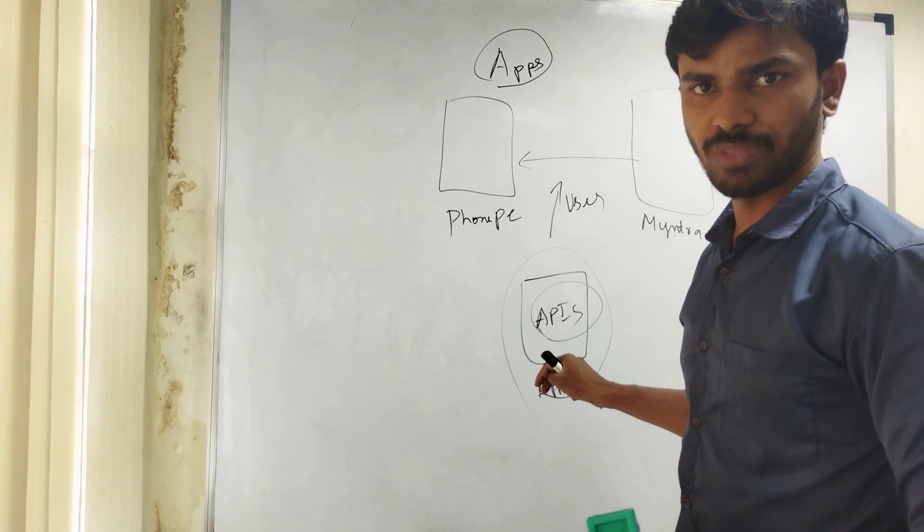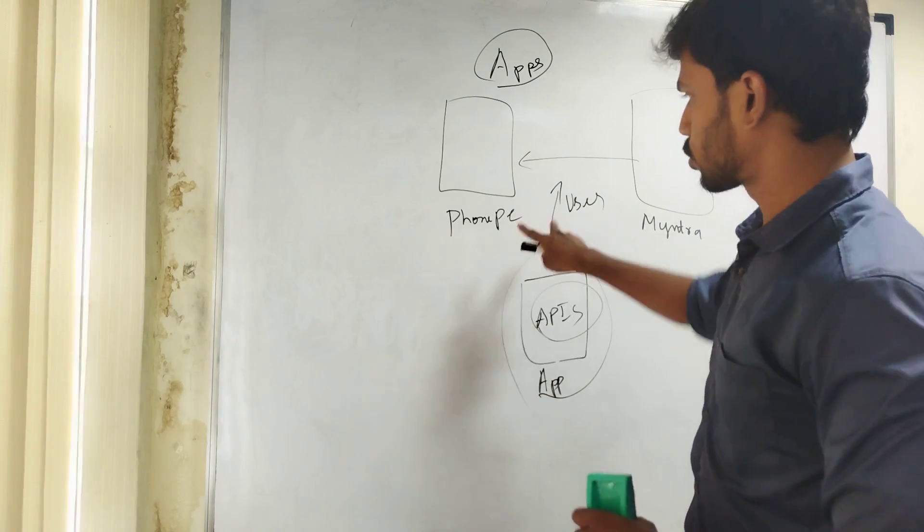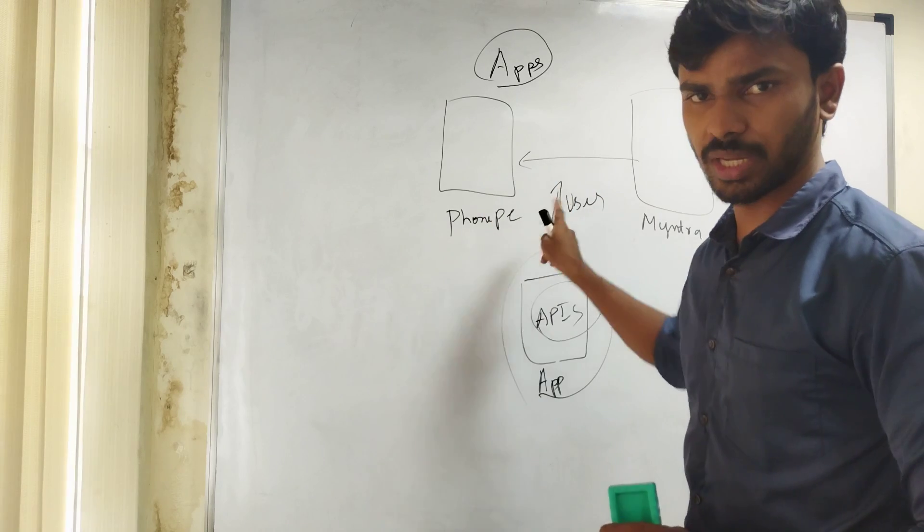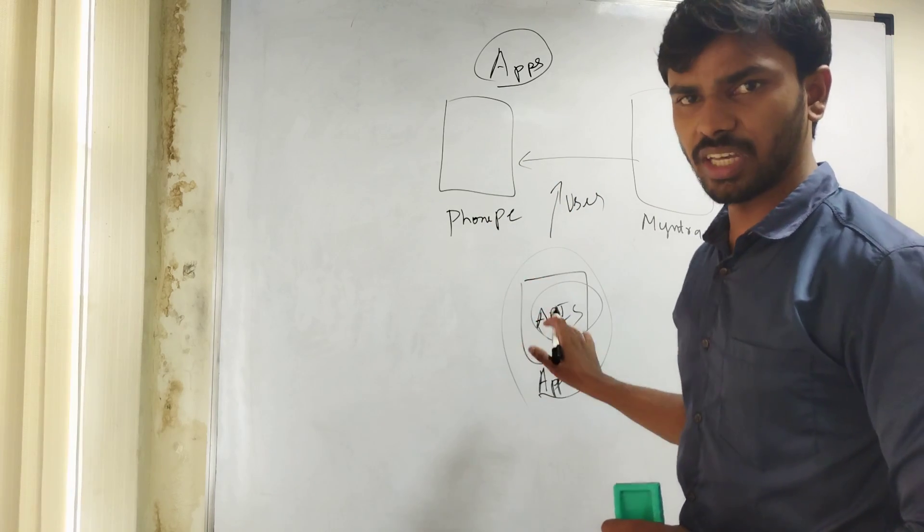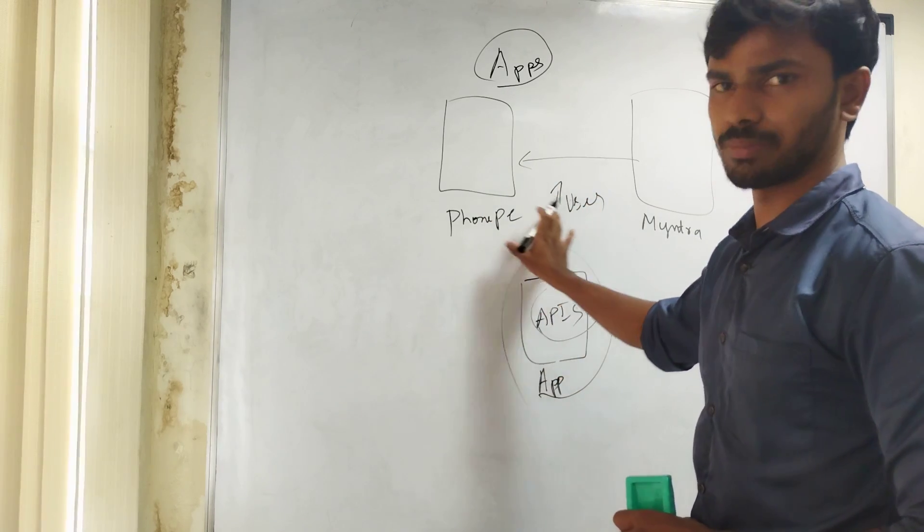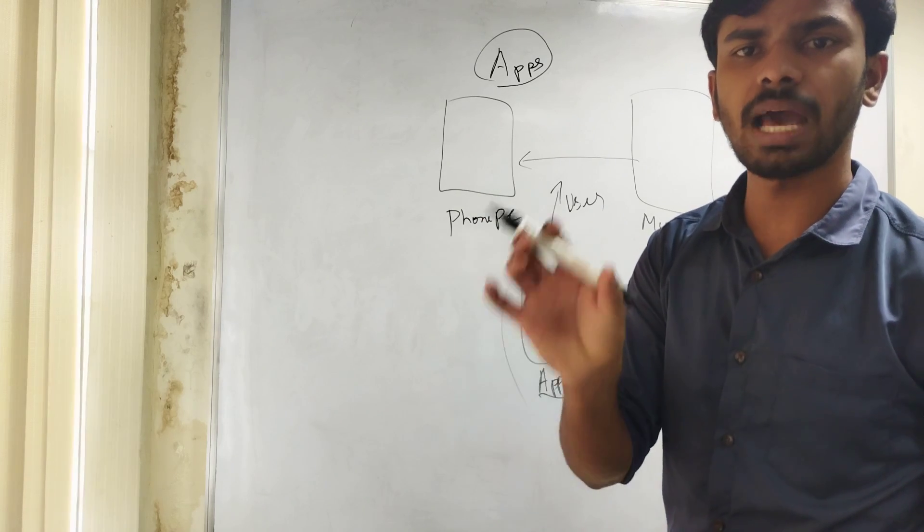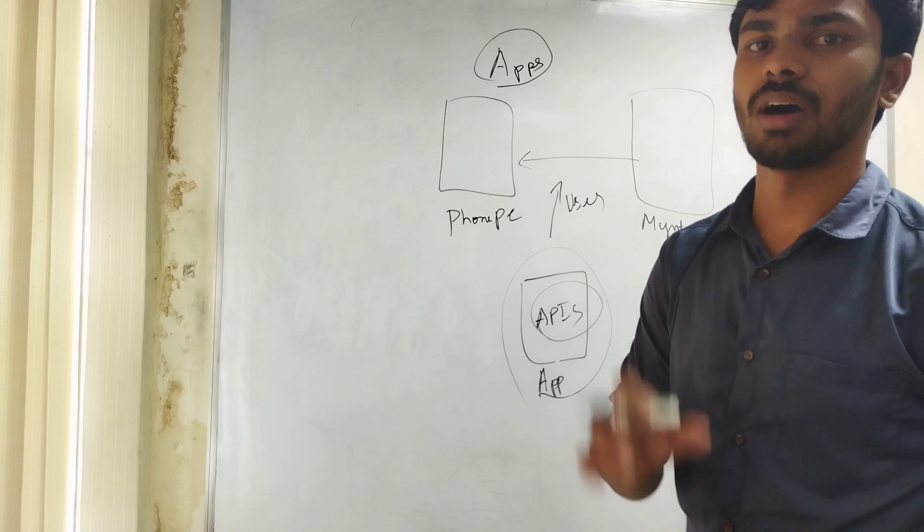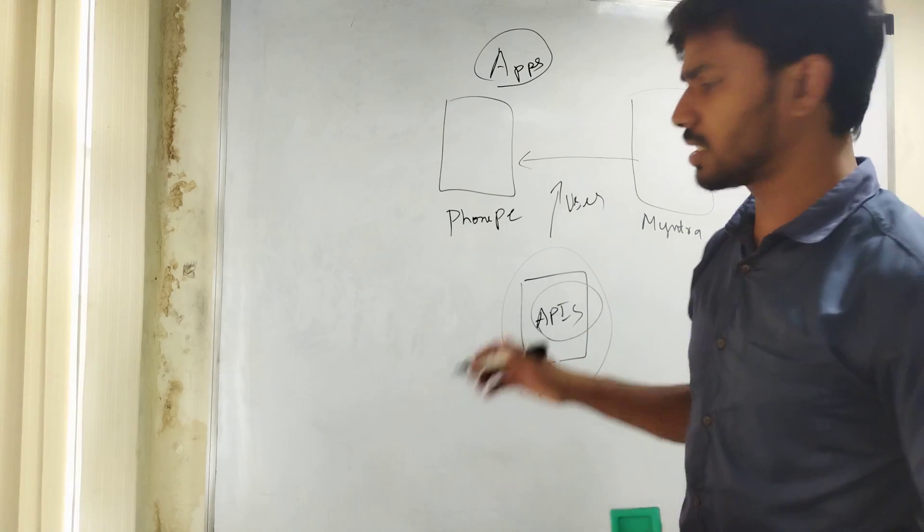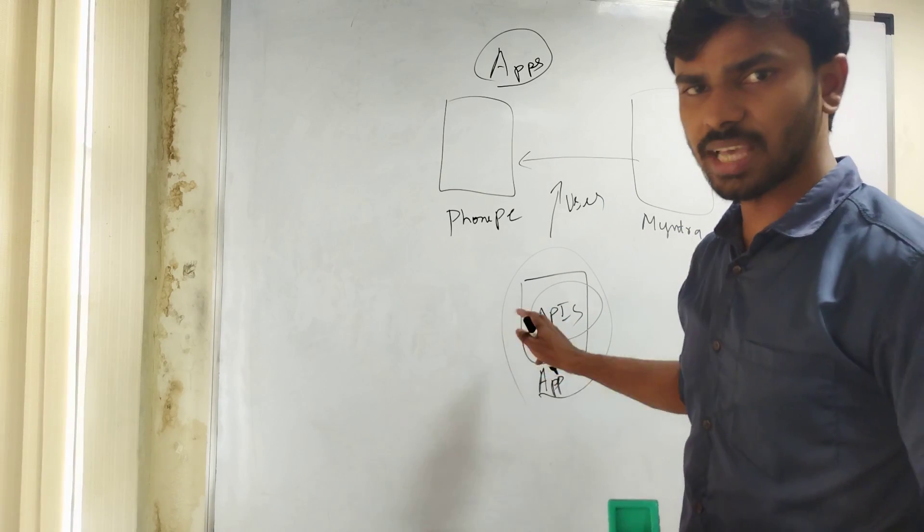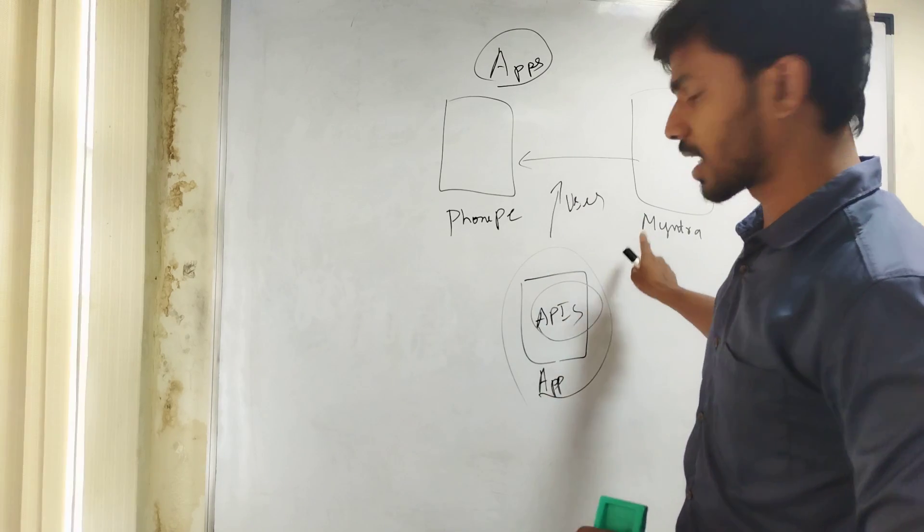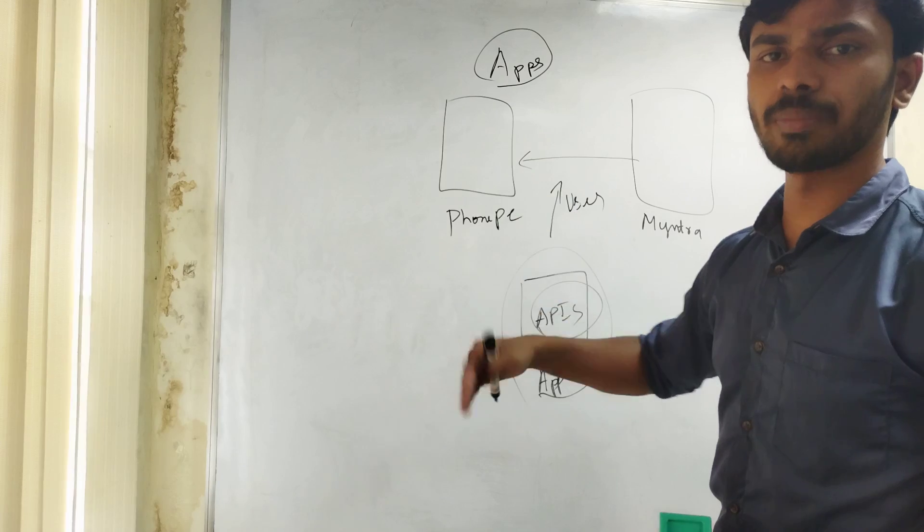After that, what these APIs do is help us to fetch the data between these two applications. When two applications are communicating with each other, in between, the user information - only the username, what kind of product he selected, and the company name - is consumed by the API.